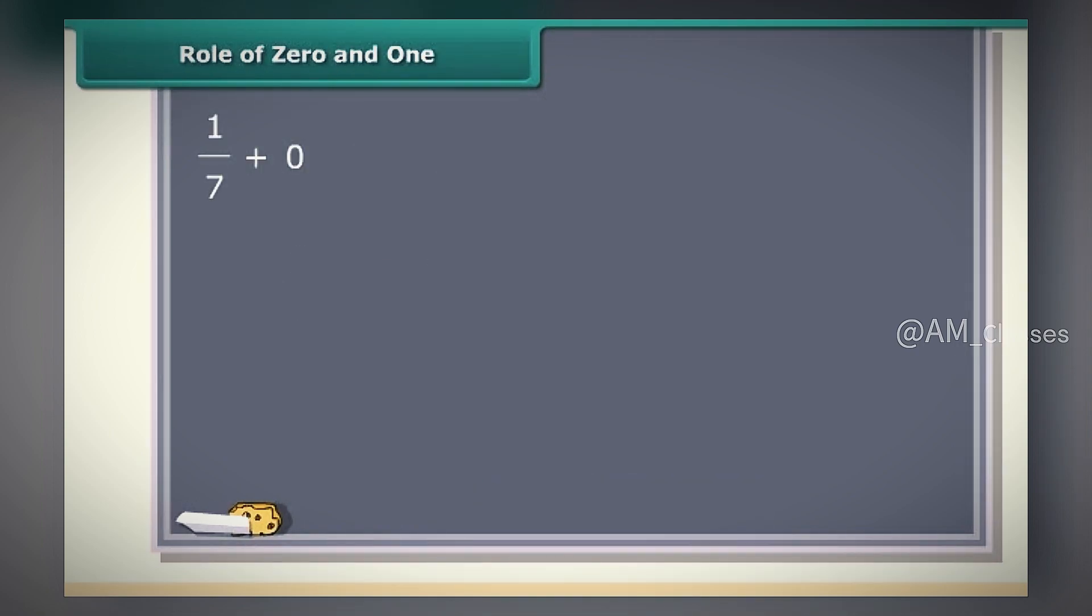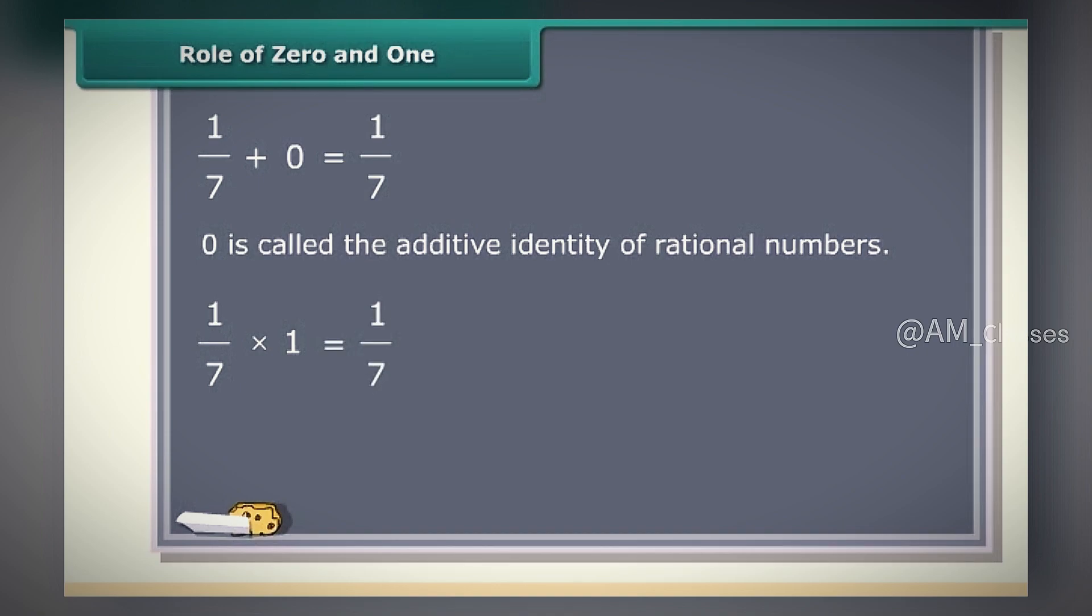Here we have added a 0 to a rational number. What did you notice? When we add 0 to a rational number, the sum is always again that rational number. For this reason, 0 is called the additive identity of rational numbers. Now check out the multiplication of a rational number with 1. What did you observe? When we multiply a rational number with 1, the product is always again that rational number. For this reason, 1 is called the multiplicative identity of rational numbers.